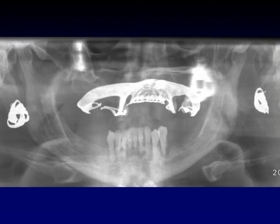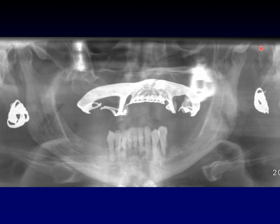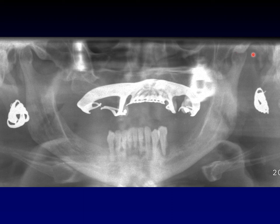This is an example of a temporomandibular joint dislocation. On the normal side, you can see the condylar head seated nicely in the glenoid fossa — that's the normal relationship. However, on the affected side, the condylar head is out of the glenoid fossa and instead is projecting over the articular eminence that is anterior to the glenoid fossa. That's a complete dislocation. Sometimes the joint will simply sublux a little bit and not come all the way out, but this is what a temporomandibular dislocation looks like — the condyle out of the glenoid fossa.